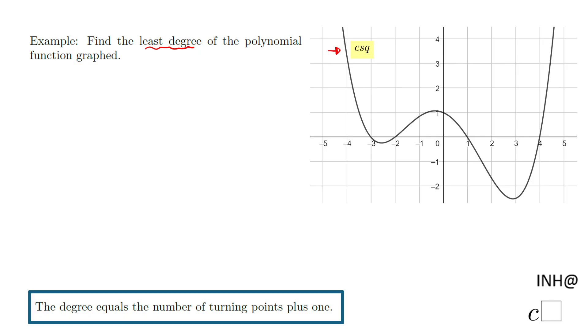to count what I call the turning points, and then add one. That will give you the least degree of the polynomial. So let's take a look what I mean.